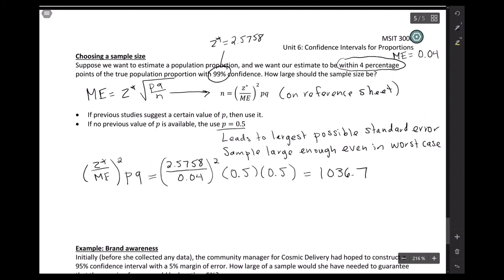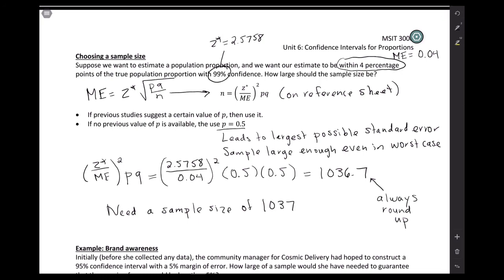So you don't want a decimal because your sample size can't be a decimal. And actually, no matter what the decimal turns out to be, in these cases, we always round up. Because we want to make sure that we're sort of playing it safe. So if we round up, that means that we need a sample size of 1037 to get the margin of error and the confidence level that we want.